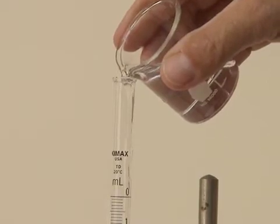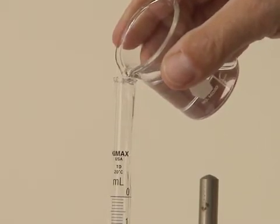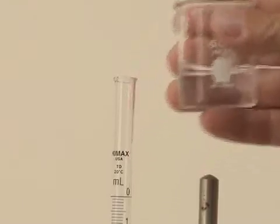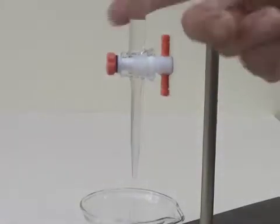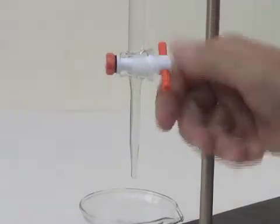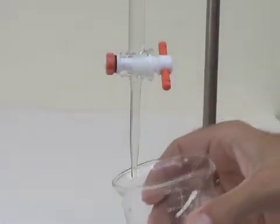The easiest way to do this is just to open the stopcock fully and to give the tip a couple of taps with your finger. You should also touch the tip of the burette with the side of the waste beaker. This will remove any drops that might be hanging there.